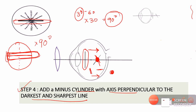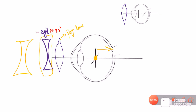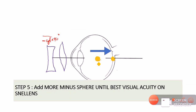By adding the minus cylinder, we collapse both focal lines to a single focal point. However, the patient still sees blurred vision because this focal point is still in front of the retina. The next step is to move this focal point onto the retina by adding another minus sphere, since the patient is now effectively myopic. We continue adding minus sphere until the best visual acuity on the Snellen's chart is obtained.